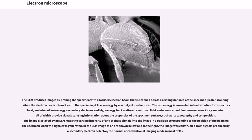The SEM produces images by probing the specimen with a focused electron beam that is scanned across a rectangular area of the specimen, raster scanning. When the electron beam interacts with the specimen, it loses energy by a variety of mechanisms.